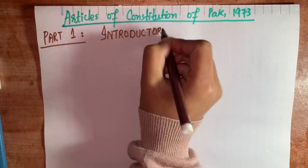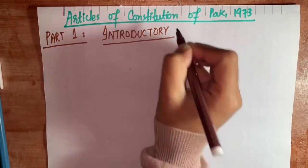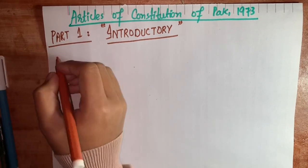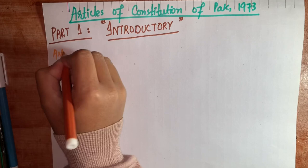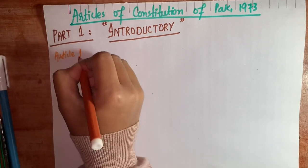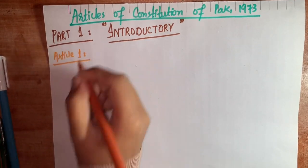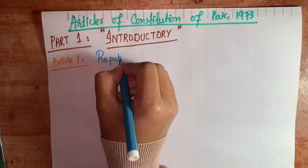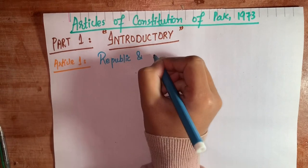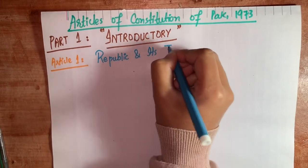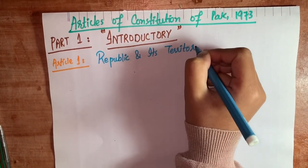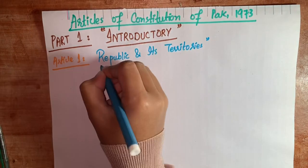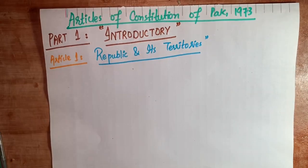First we are going to discuss the introductory part of articles, which includes Article 1 to Article 6. In the introductory part, Article 1 is related to the Republic and its territories. Articles 1 to 6 are just the introduction — this is not difficult so we are going to cover it quickly.